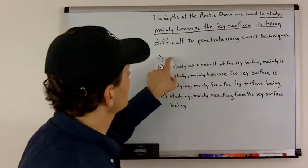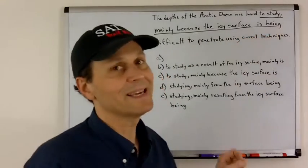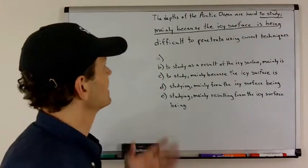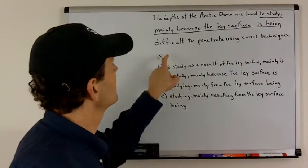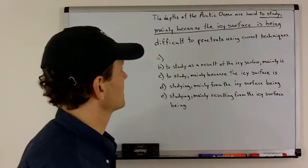So, I would say that because A has that being word in there, which doesn't really make any sense in this sentence, I would eliminate that as a possibility.